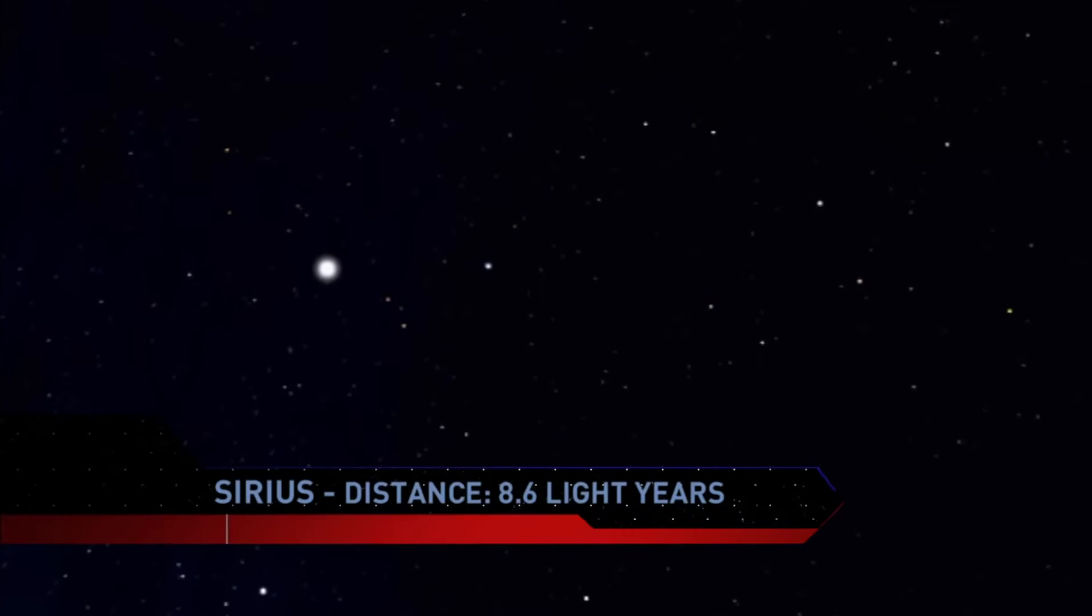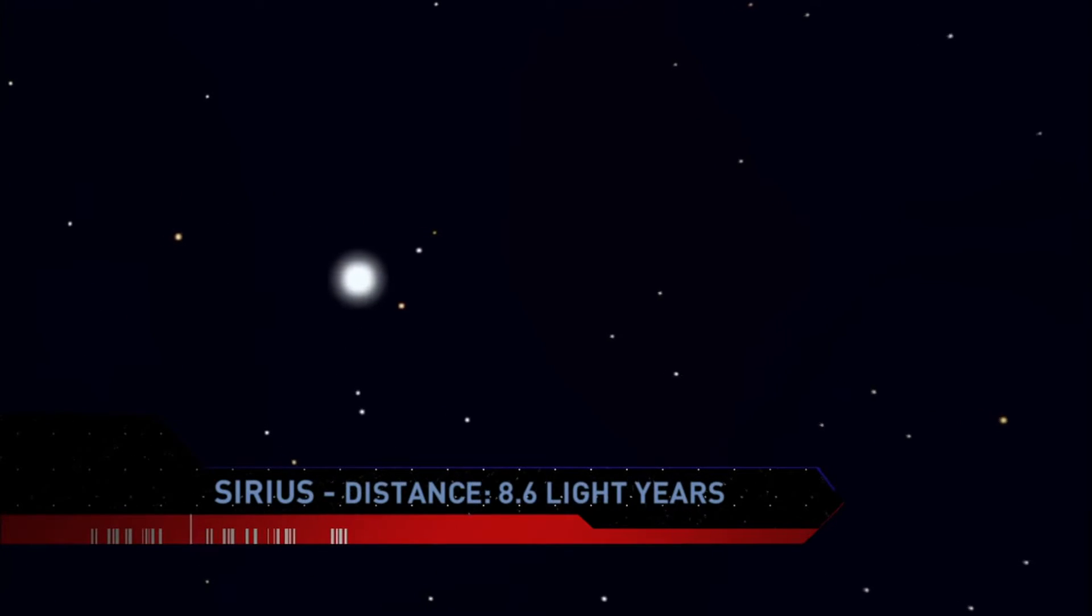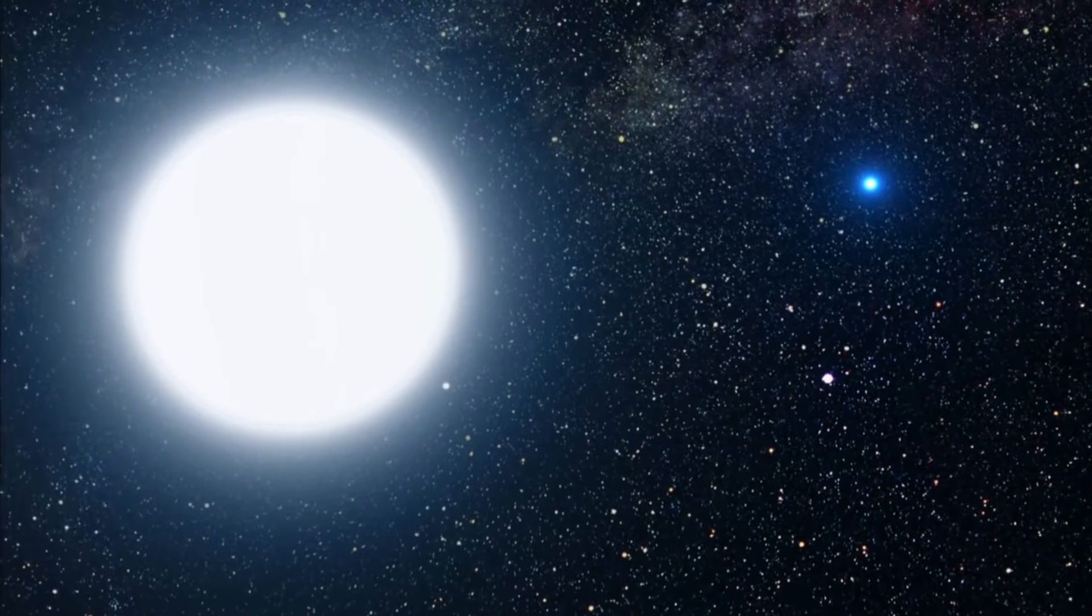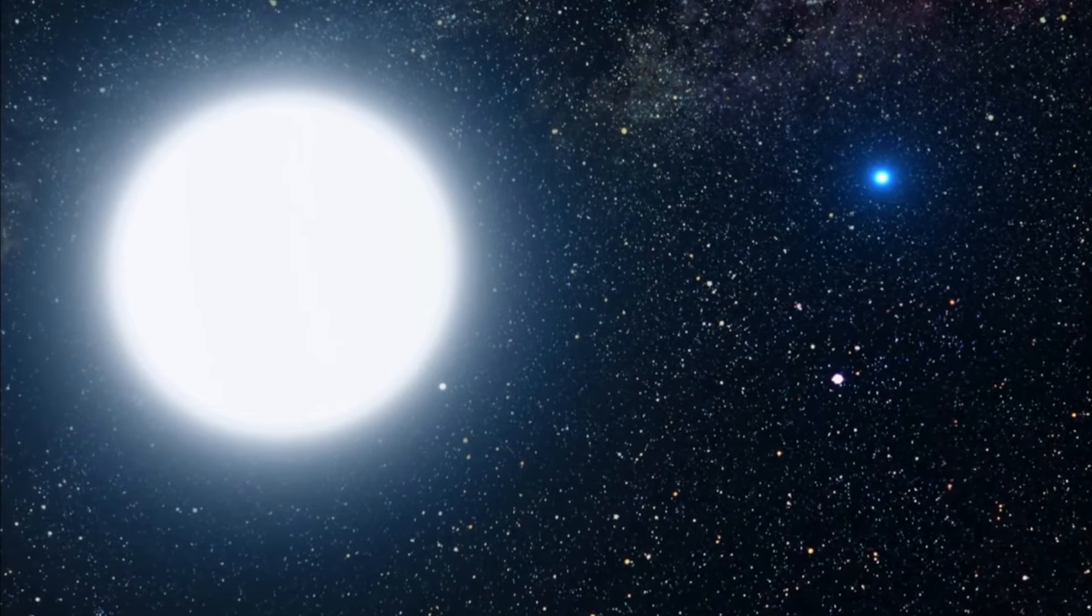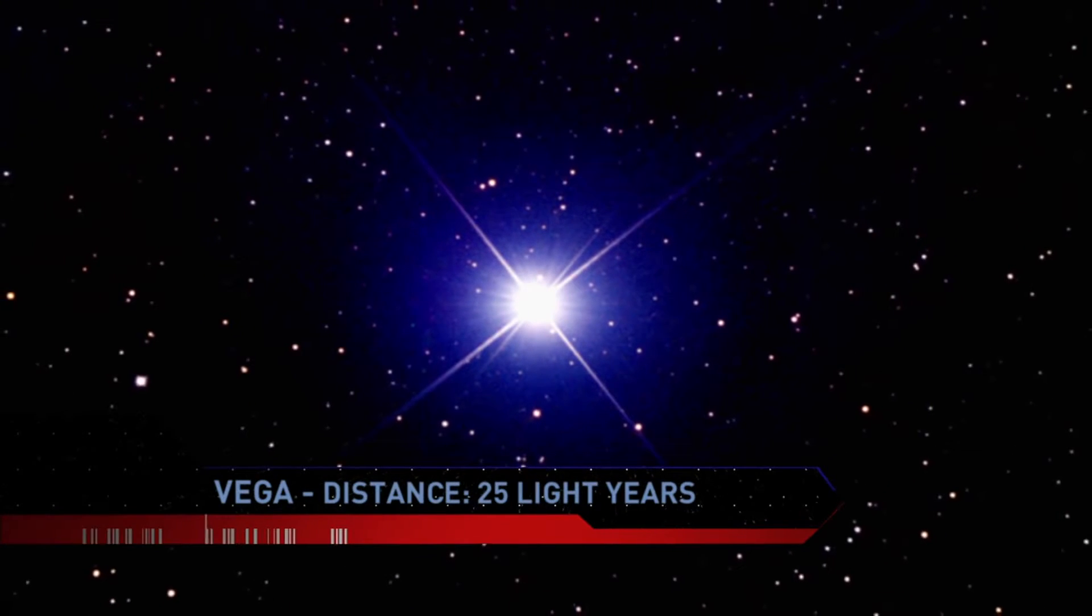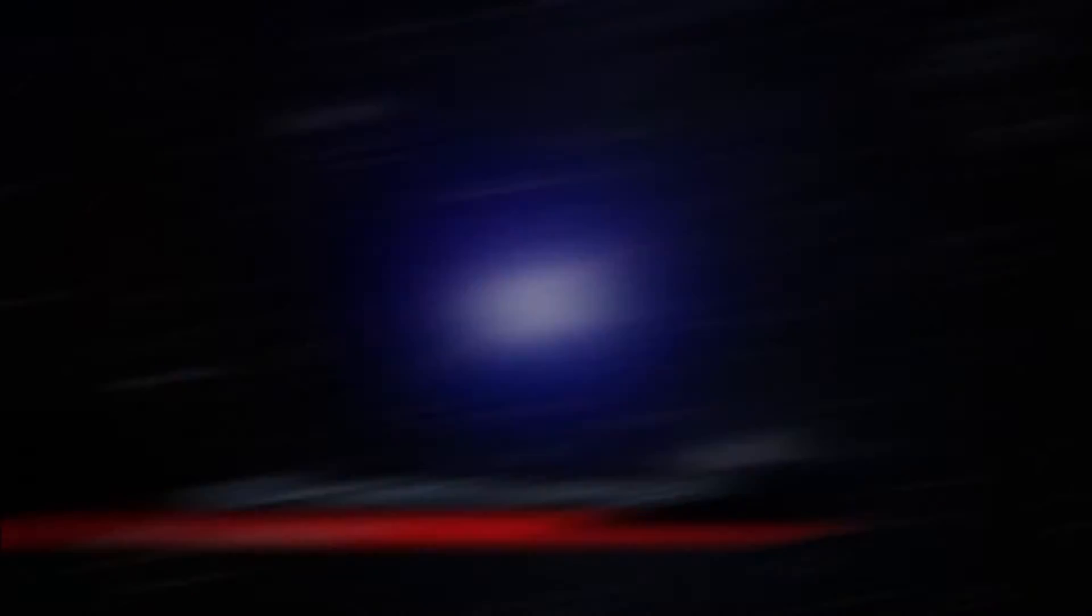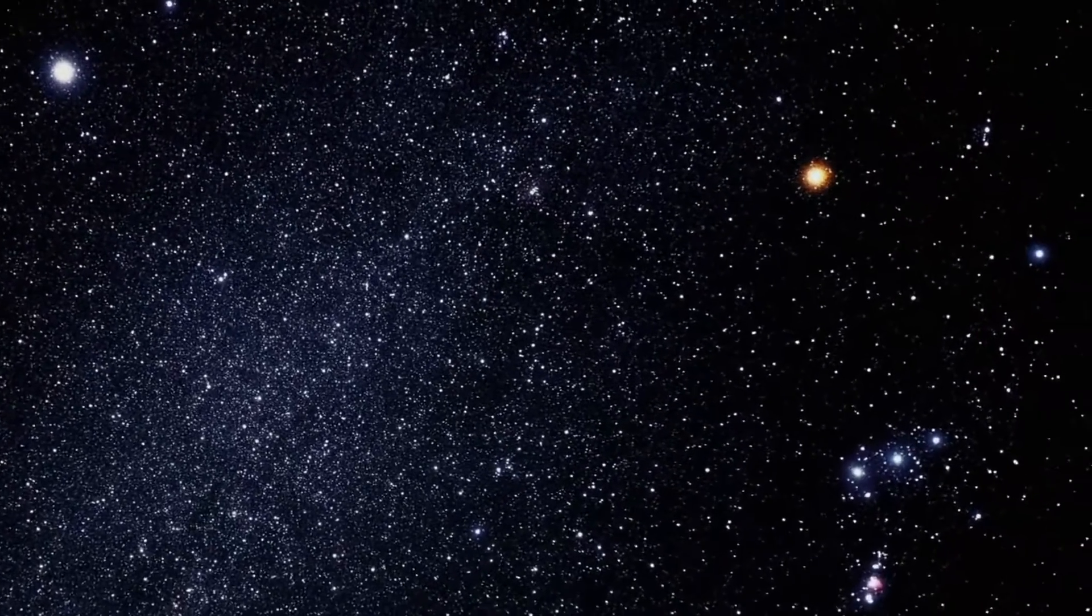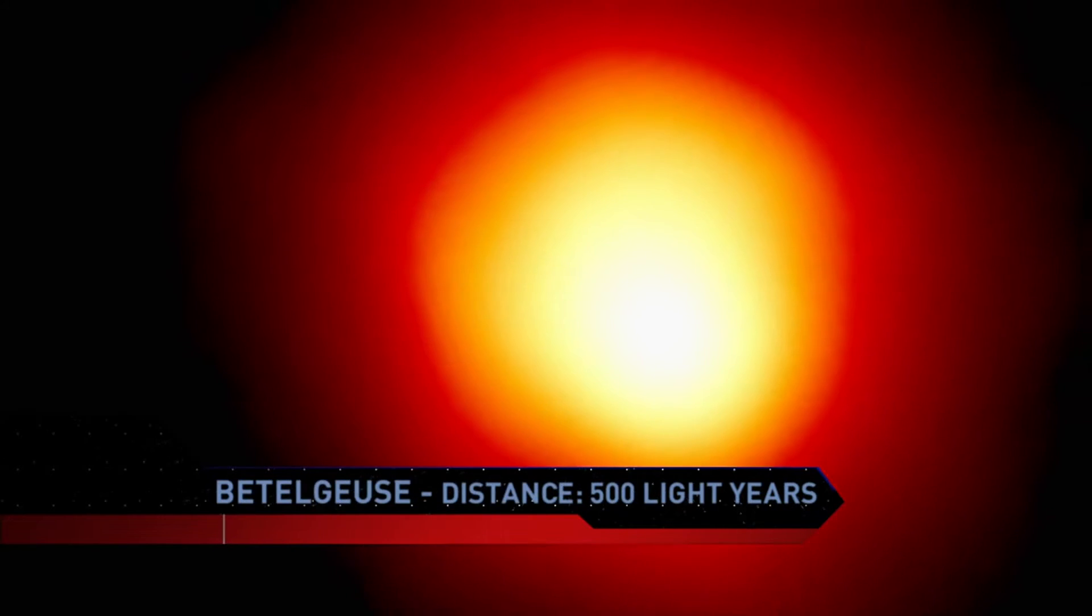Using light years to describe distances opens up another dimension of light speed's character. Think of it. Sirius, the brightest star in the sky, is 8.6 light years away. That means we see it not as it is today, but as it was 8.6 years ago. We see the bright star Vega as it was 25 years ago. And the red supergiant Betelgeuse as it was 500 years ago.